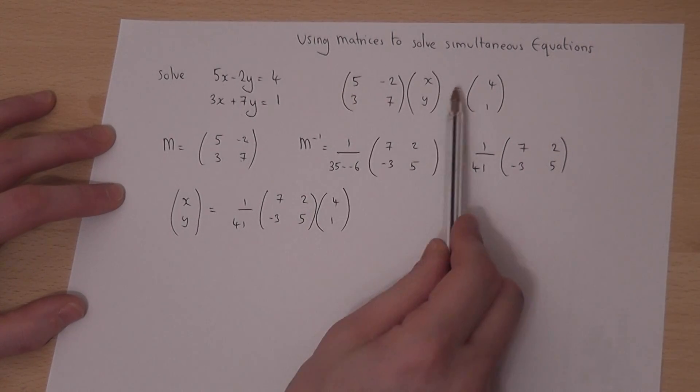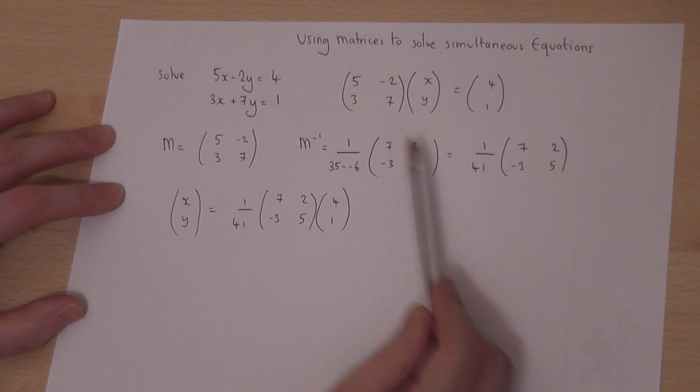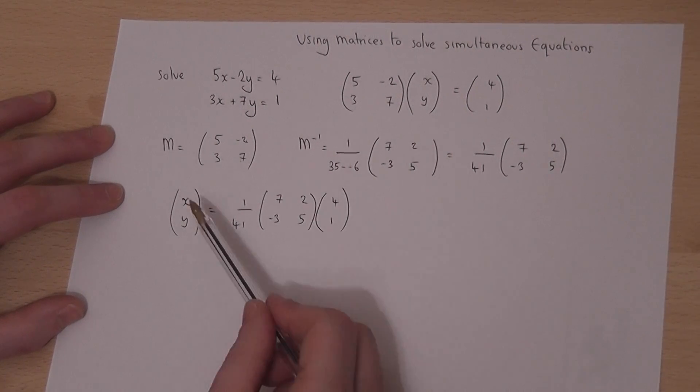Multiplying both sides by M inverse will cancel out the coefficient matrix, leaving just x and y.